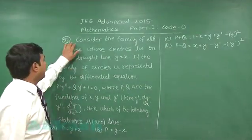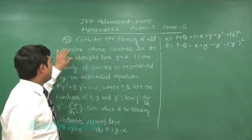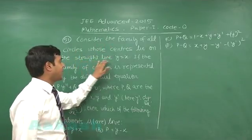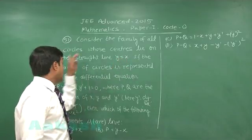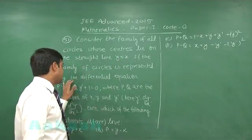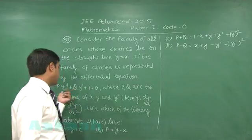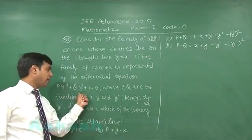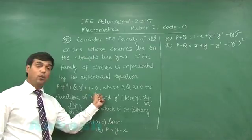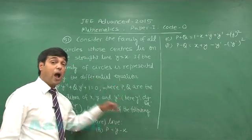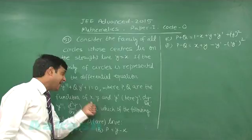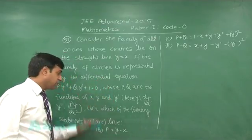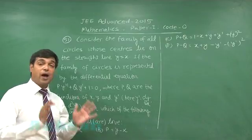Let us go for the next one, that is question 51. Consider the family of all circles whose centers lie on the straight line y equals x. If the family of circles is represented by the differential equation p times the second derivative of y plus q times dy/dx plus 1 equals 0, where p and q are functions of x, y and dy/dx, then which of the following statements is or are correct?